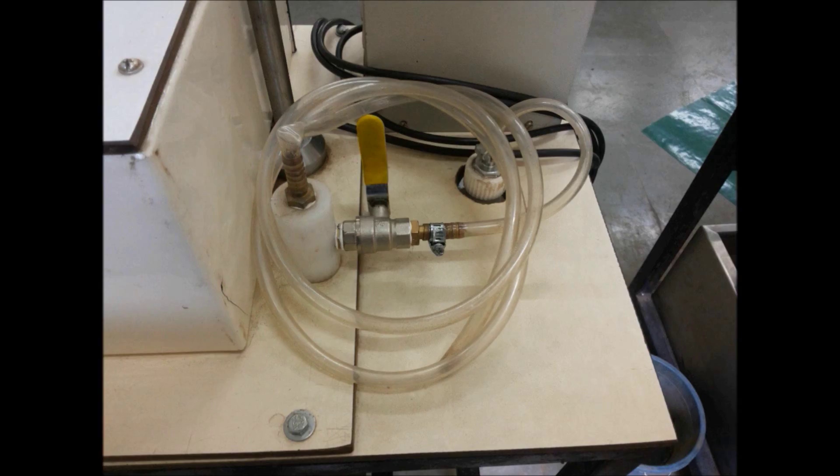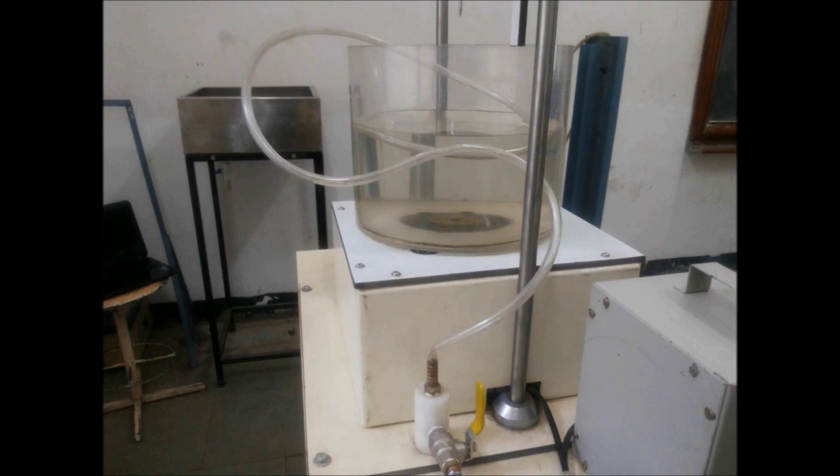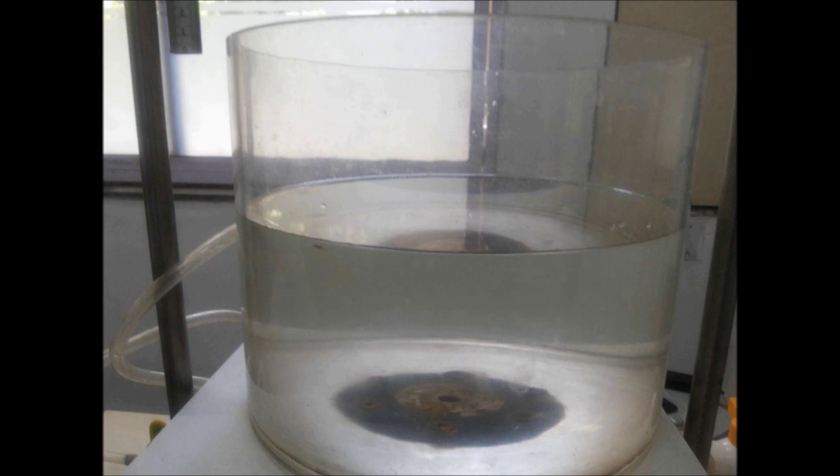Now the water passes through the transparent tube through a valve into the cylinder. Here the transparent tube from where the water is flowing into the cylinder is adjusted tangentially, because to avoid the disturbance and turbulence in the vortex formation.